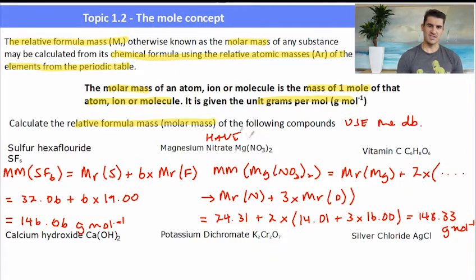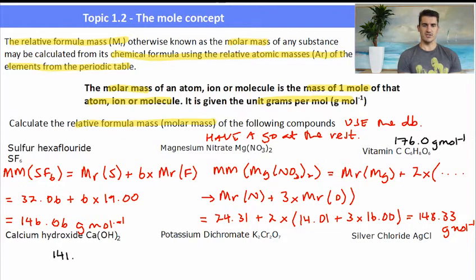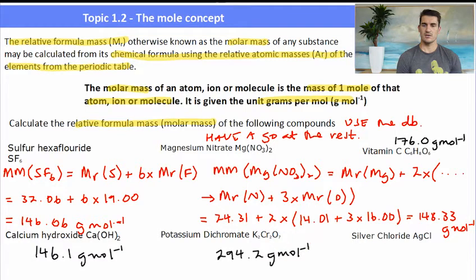The other ones are there. Vitamin C, calcium hydroxide, potassium dichromate and silver chloride. What I want you to do is pause the video and have a go at the rest and I'll write up the answers. So vitamin C has a molar mass of 176.0 grams per mole. Calcium hydroxide is 146.1 grams per mole. Potassium dichromate, 294.2 grams per mole. And finally silver chloride, 143.3 grams per mole. You will become so good at these that you don't need to do that setting out in the red. It will simply be a matter of determining the molar mass very quickly and then writing it down.